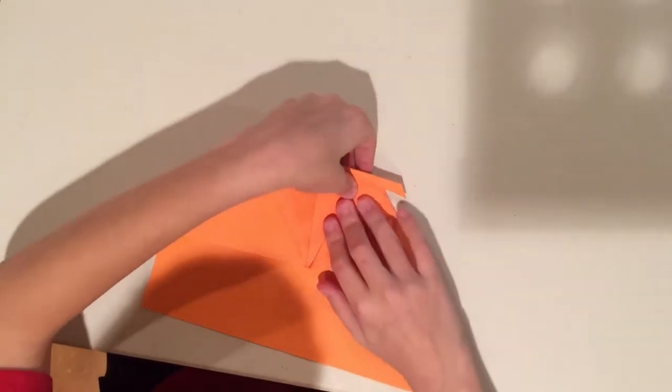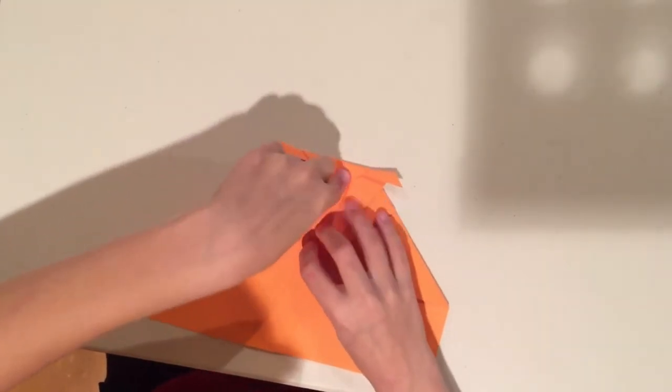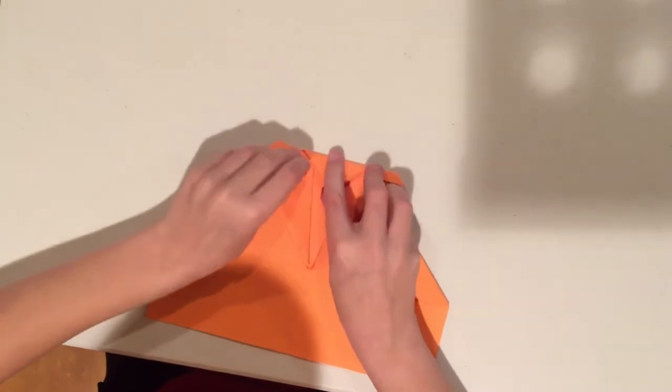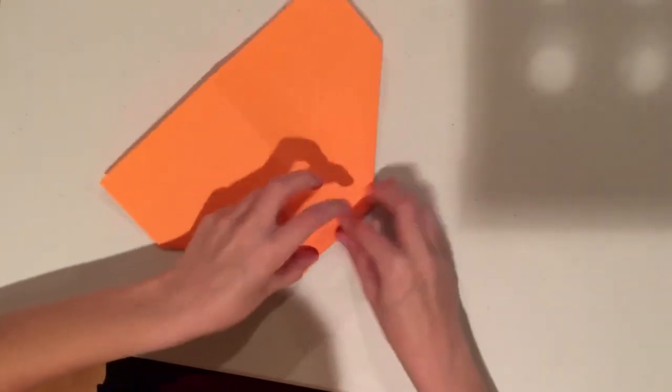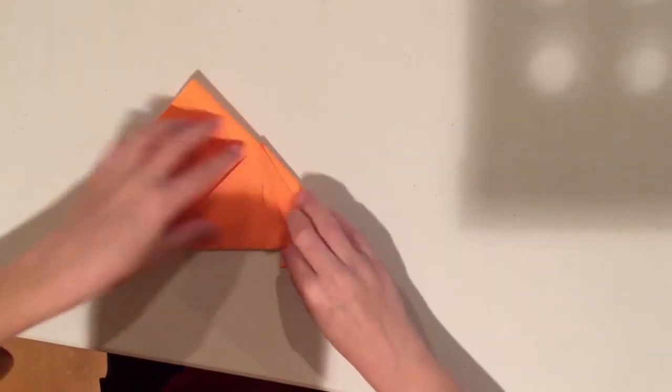Now your plane is almost done. You just need to fold the wings and give it some up elevator. So now we're going to flip it over and fold in half on the existing crease.